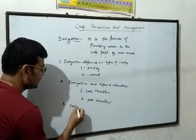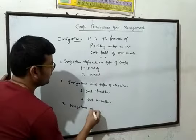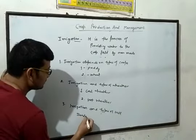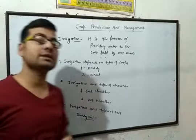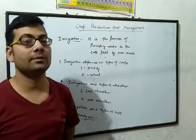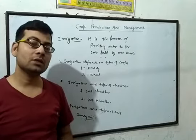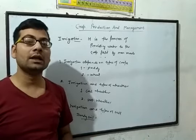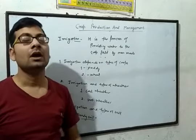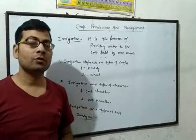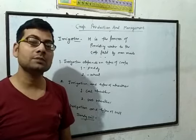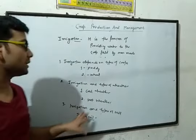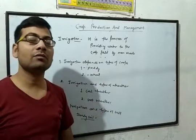The third factor affecting irrigation is the type of soil. Sandy soil has a particular particle size and the science of water holding capacity. The water holding capacity of the soil determines what irrigation will be required and how much water will be provided.